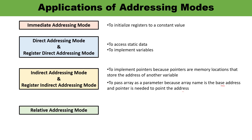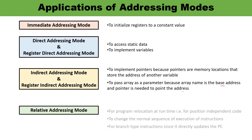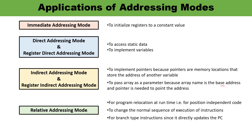Next is relative addressing mode. Relative addressing mode means the content of the program counter (PC) is added to the address part of the instruction to obtain the effective address. It is used for program relocation at runtime — that is, for position-dependent code. It can also be used to change the normal sequence of execution of instructions, and for branch-type instructions, because it directly updates the program counter.